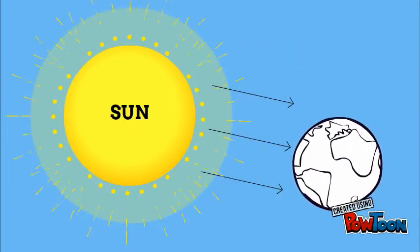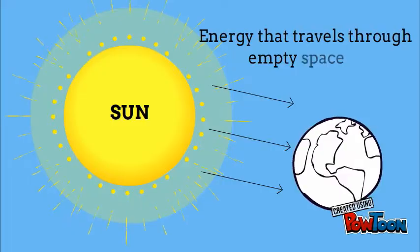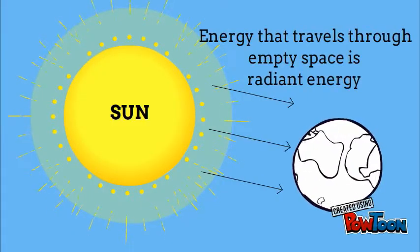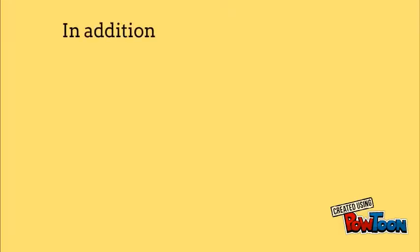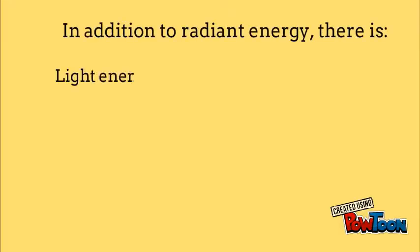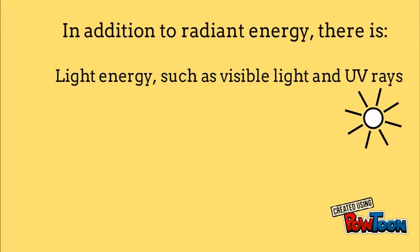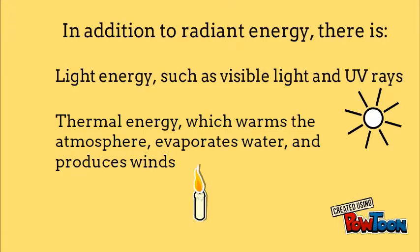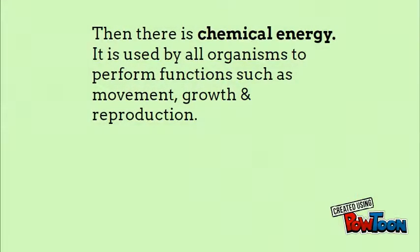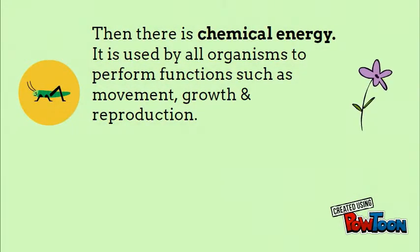There are four types of energy. The first is radiant energy, which travels through empty space. In addition, there is light energy, which is the visible form of radiant energy, such as visible light and UV rays. There is also thermal energy, which warms the atmosphere, evaporates water, and produces winds. And finally, there is chemical energy, which is used by all organisms to perform essential functions for life.